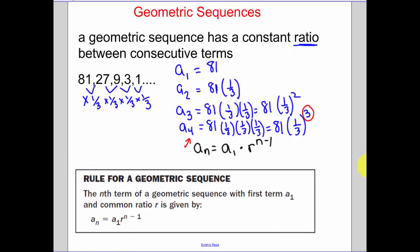So our rule for our geometric sequence. And again, I'm not going to give this to you. That's why I explained to you where I get it from. Our nth term is our first term times the common ratio to the n minus one power.